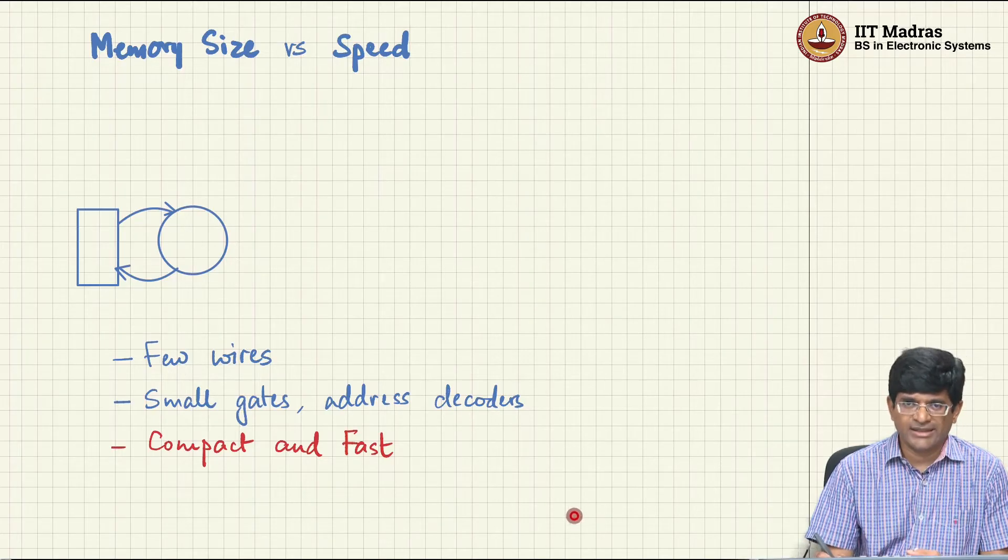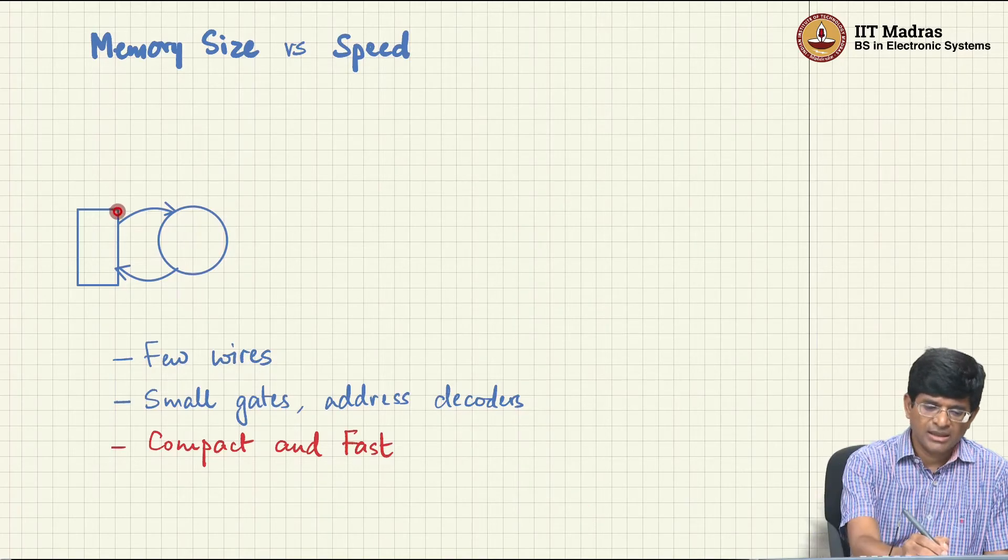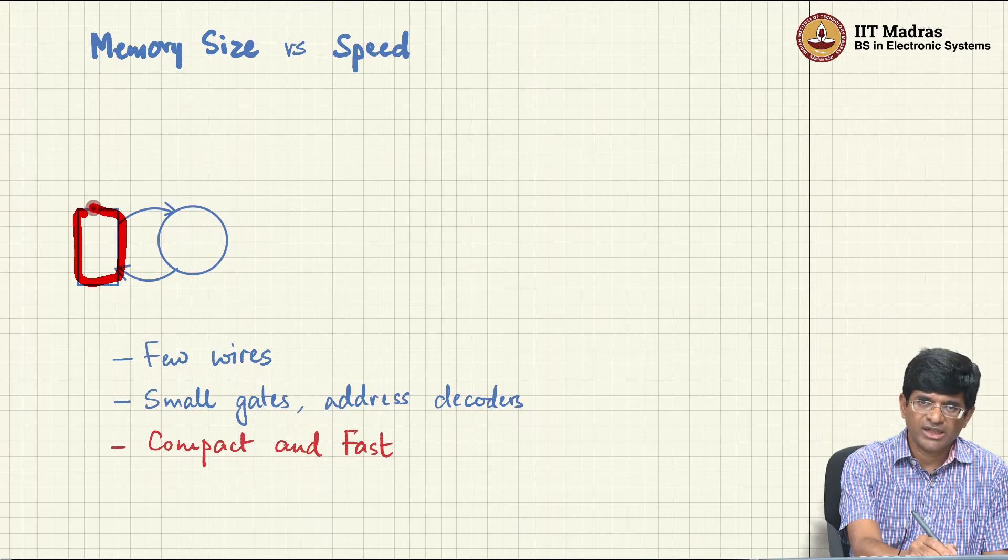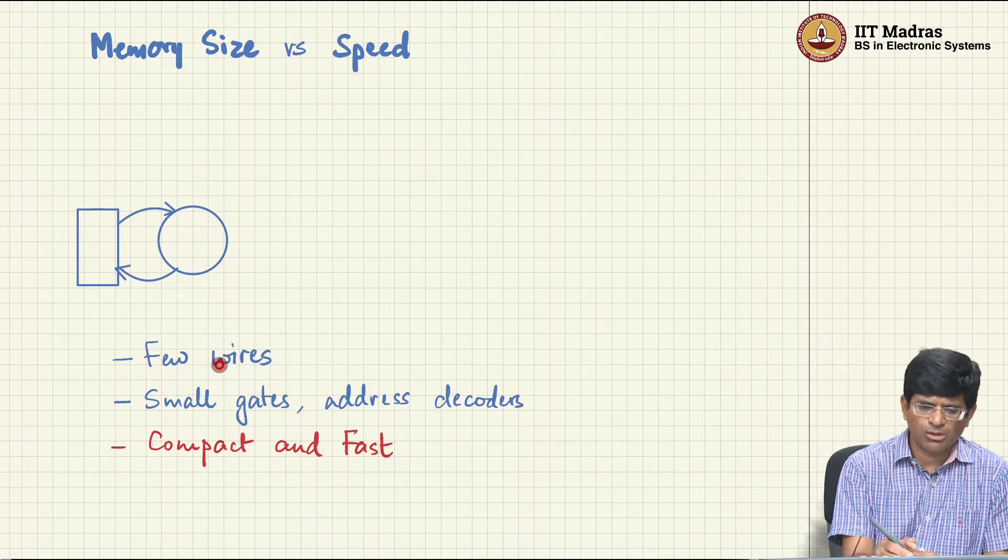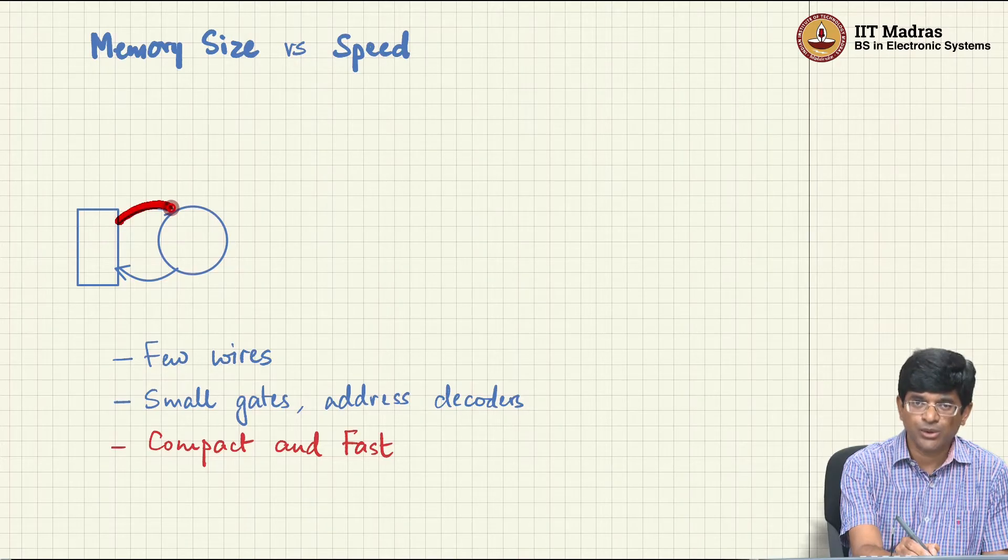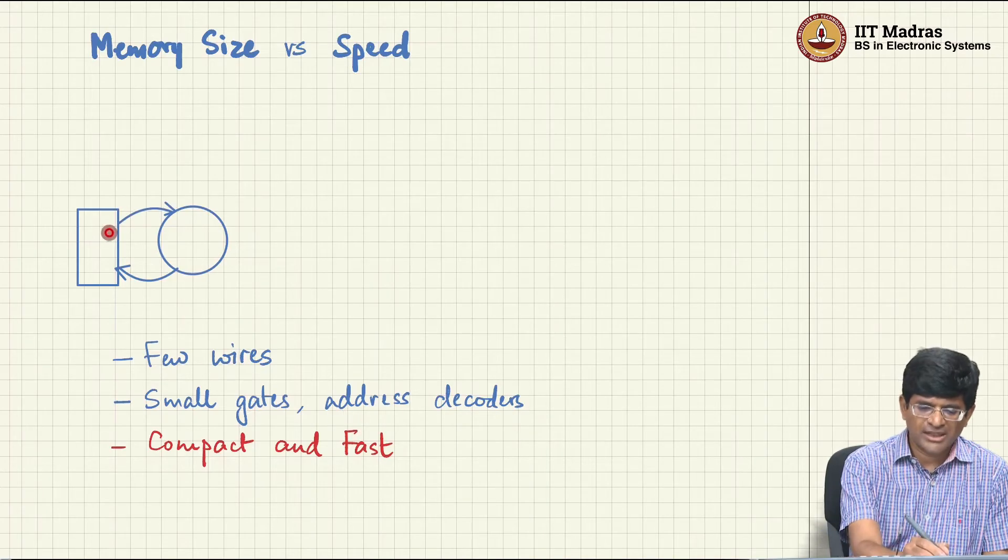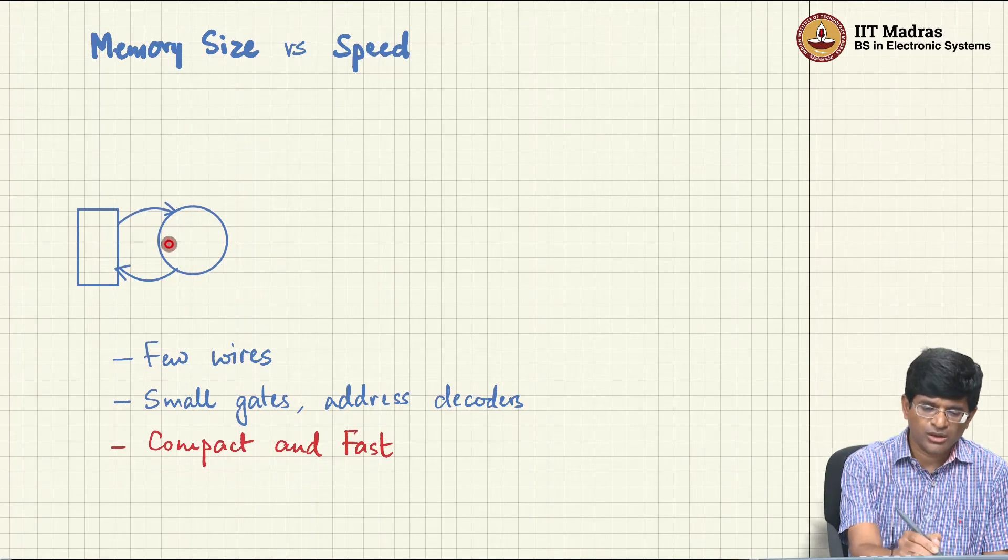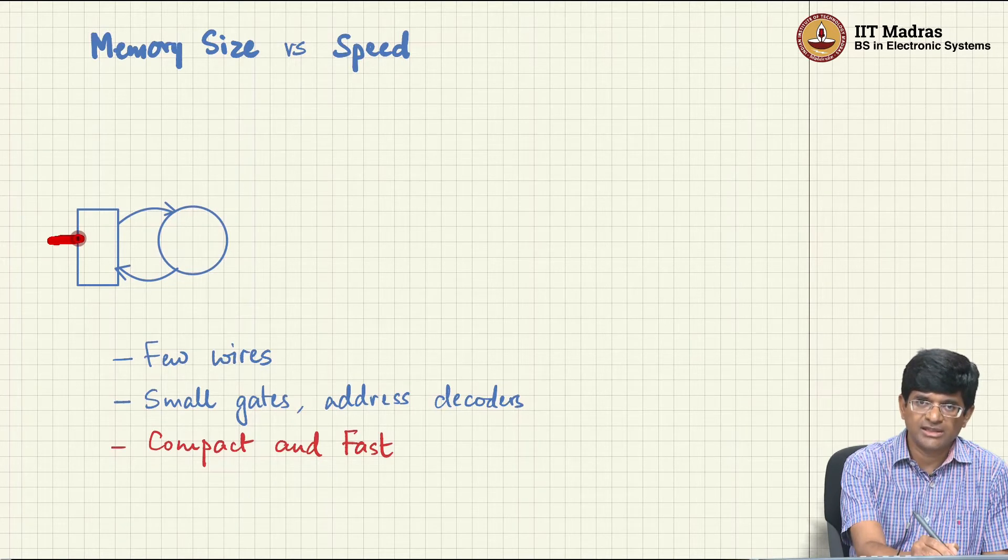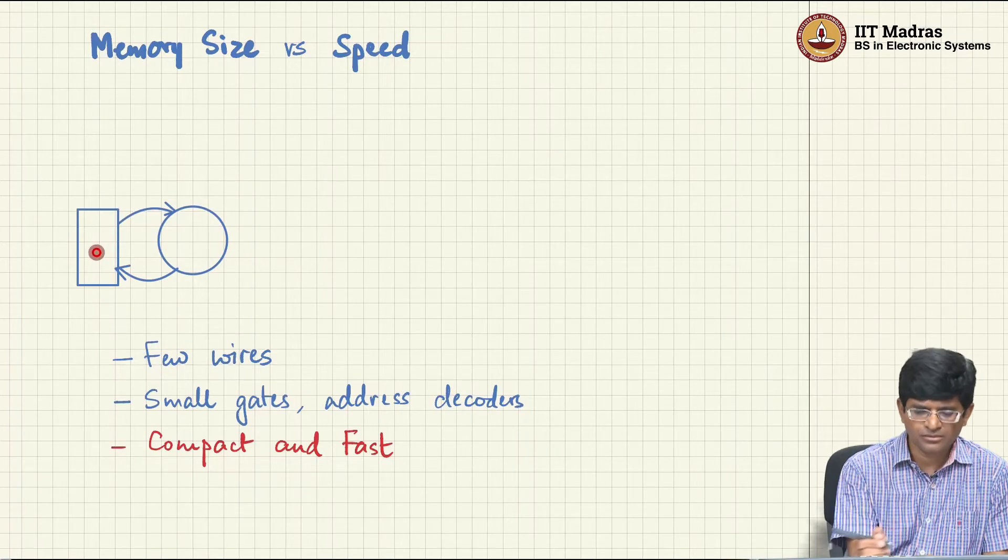The real world kicks in. Physics comes into the picture and it says if I have a small amount of memory that needs to be connected, it is not a problem because there will be a few wires that need to be connected from this memory to the ALU. There will be some kind of gates required to take the address and figure out which value in this memory needs to come out. So there is something called address decoding.